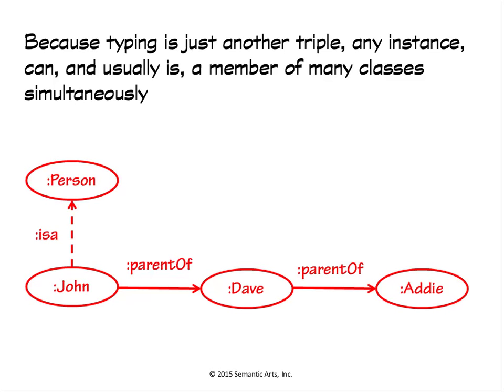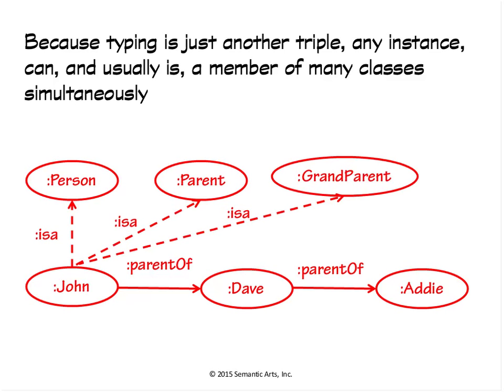Later, if you had this same data and wrote some inference and detected it, then not only is John a person, he's also a parent. We could further deduce that he's a grandparent. This is what I mean by evolving data in place — this one instance is simultaneously a member of many, many classes, which is pretty much the norm in semantic technology and pretty much anything but the norm in any other kind of technology.